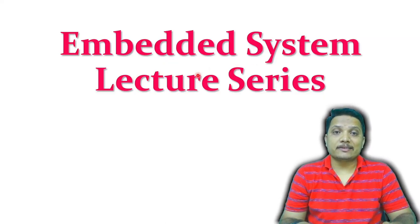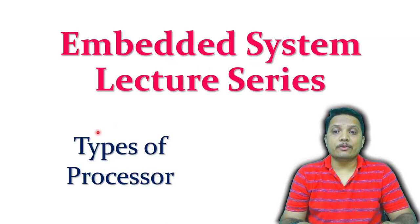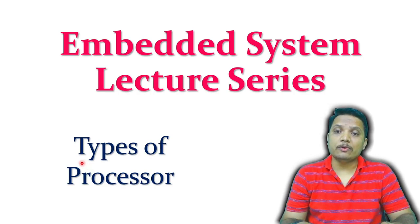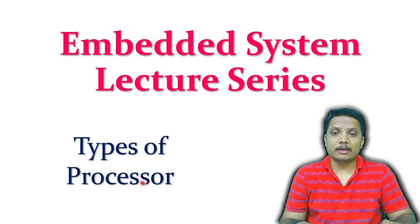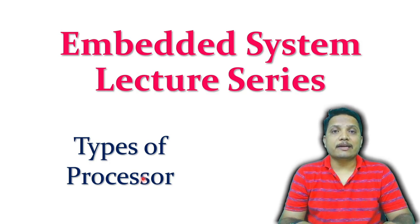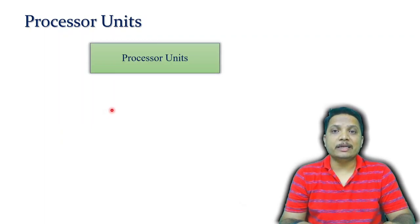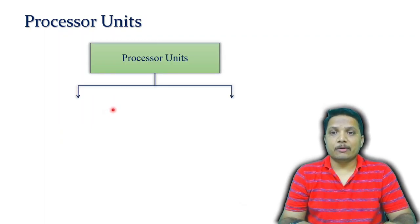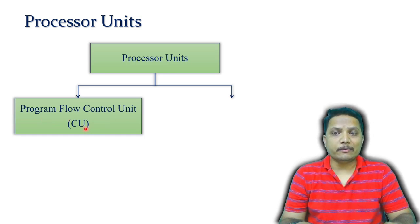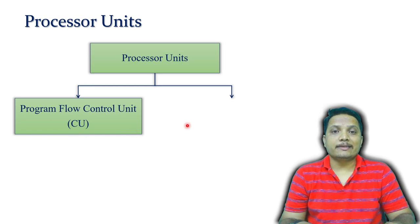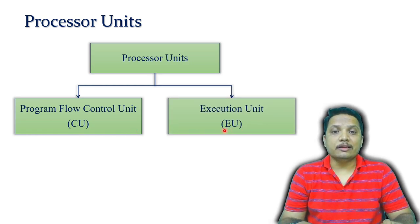Welcome to embedded system lecture series. In this video, I will explain types of processors. Before we go for understanding types of processors, one should know what units are there with a processor. A processor basically has two different units: one is the Program Flow Control Unit, in short referred to as CU, and the second is the Execution Unit.